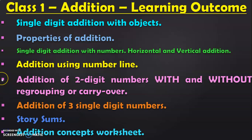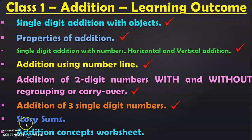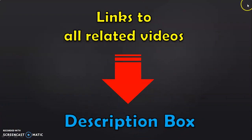Dear viewers, these are all the learning outcomes in class 1 under the topic addition, of which I have covered the following topics: single digit addition with objects in a separate video; properties of addition in a separate video; single digit addition with numbers both horizontal and vertical in a separate video; addition using number line in a separate video; addition of two digit numbers with and without regrouping or carryover in the previous video. In this video, I covered addition of three single digit numbers using the mind and fingers method. We will be dealing with story sums and addition concept worksheets in upcoming videos. Links to all relevant videos are in the description box below, and you may click on the iCard for the class 1 playlist.